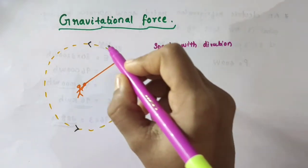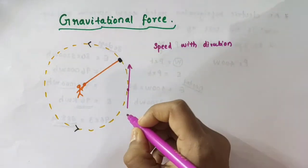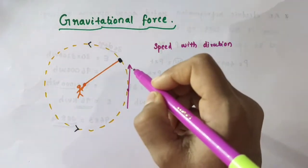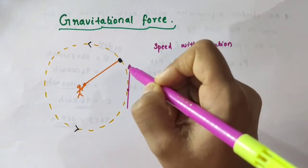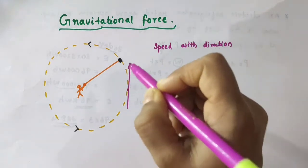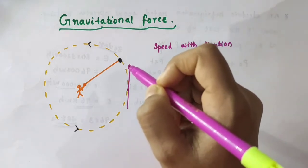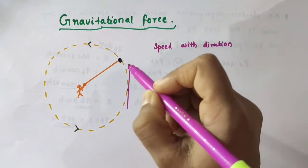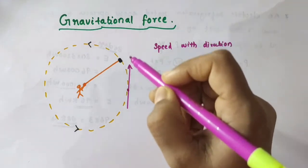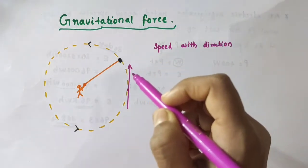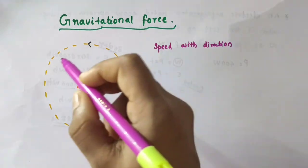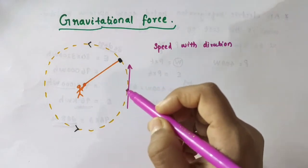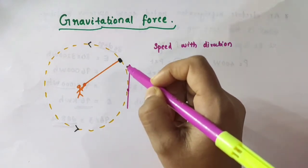If the stone were moving in the clockwise direction, we would have marked the arrow in that direction. But the stone is moving in the anti-clockwise direction, so we mark the arrow like this. This particular straight line with this arrow mark gives us the direction of motion of the stone at this particular point. At this point, the direction of motion of the stone will be along this direction.